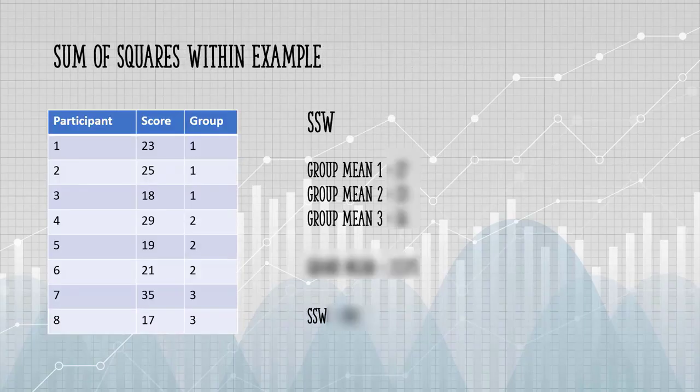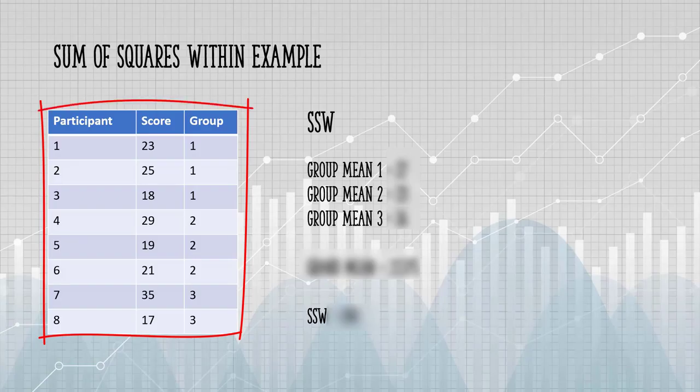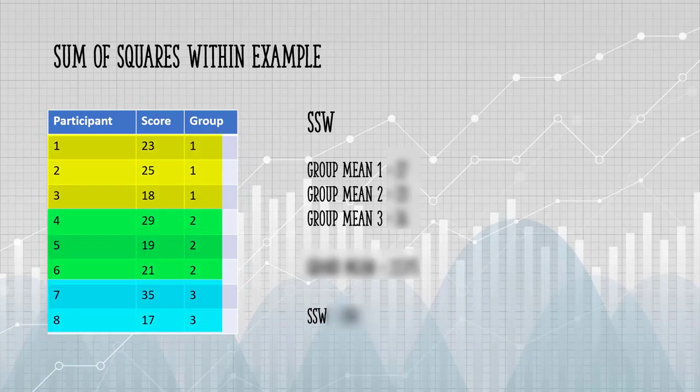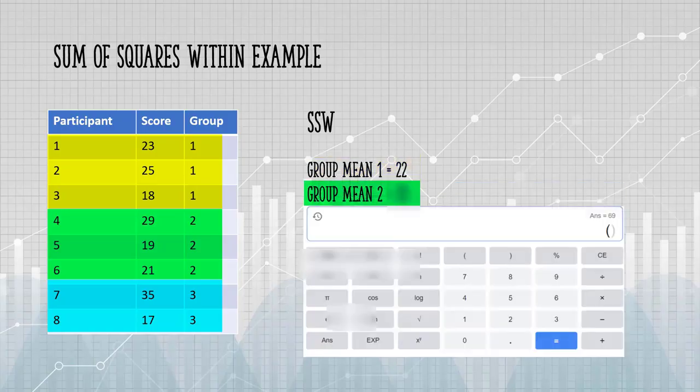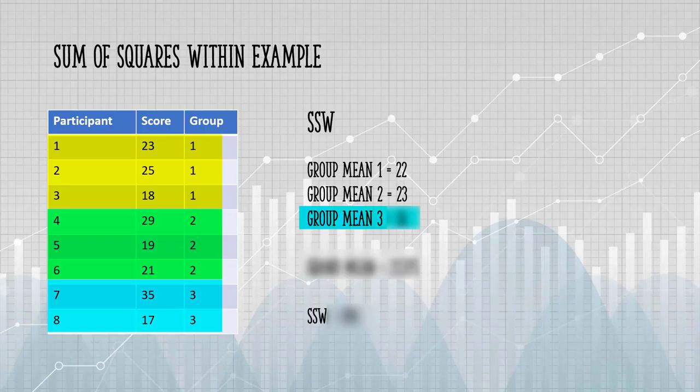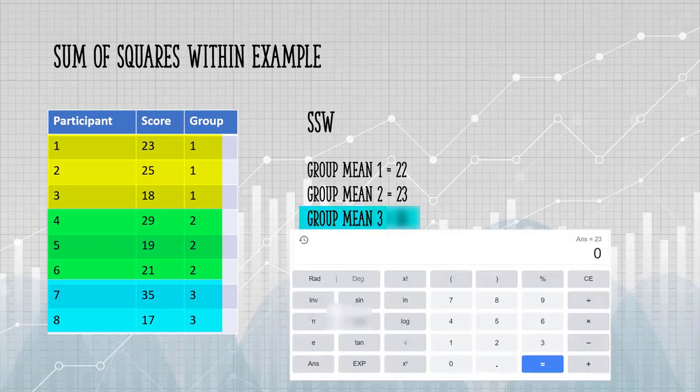Let's say we had this set of data. We have data from three groups. The first thing is to find those group means. There are three items in group one. If we add those together and divide by three, we get 22. Group mean two is also three items, so adding those together and dividing by three gives us 23. Group three has two items and the mean there is going to be those two items divided by two. Our mean is 26.